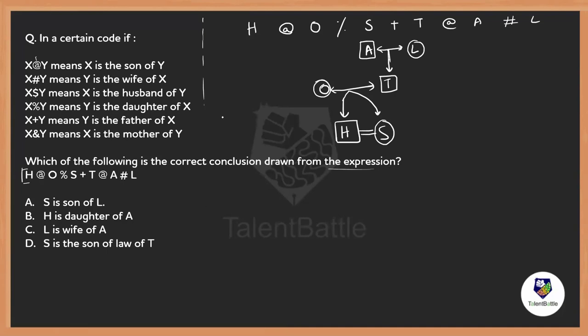Now for the question: which of the following is the correct conclusion from the expression? Option A says S is the son of L — but S is female, not a son, so that's wrong.